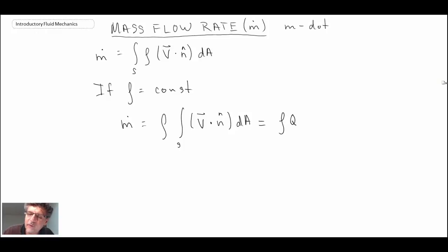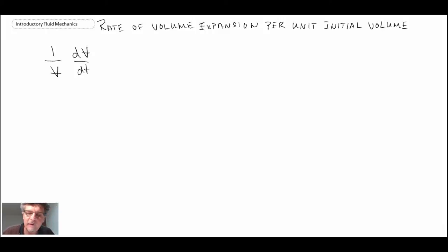The next one that we will look at is rate of volume expansion per unit initial volume. And so with this one, what we have is 1 over V, and quite often in fluid mechanics, you'll notice we'll use a V with a line through it to denote volume. That would be rate of volume change, expansion, or contraction, with respect to time, per unit initial.